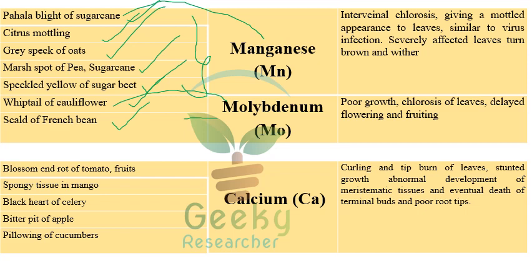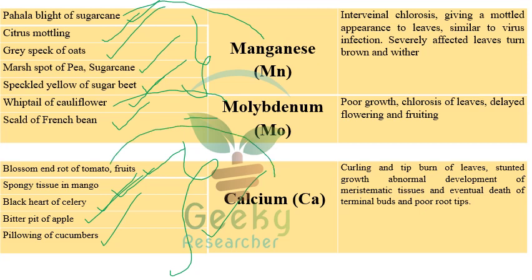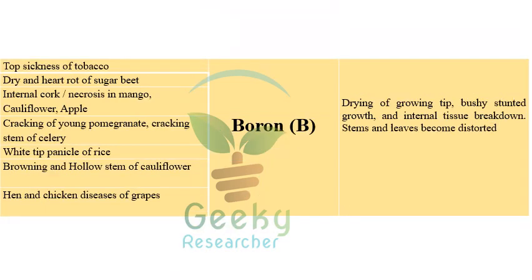Calcium deficiency causes blossom end rot of tomatoes and fruits, spongy tissue of mango, black heart of celery, bitter pit of apple, and tip burn of cucumbers. Blossom end rot of tomato is a repeatedly asked exam question, appearing in 2021 and previous years. Any blossom end rot symptom in fruits indicates calcium deficiency.